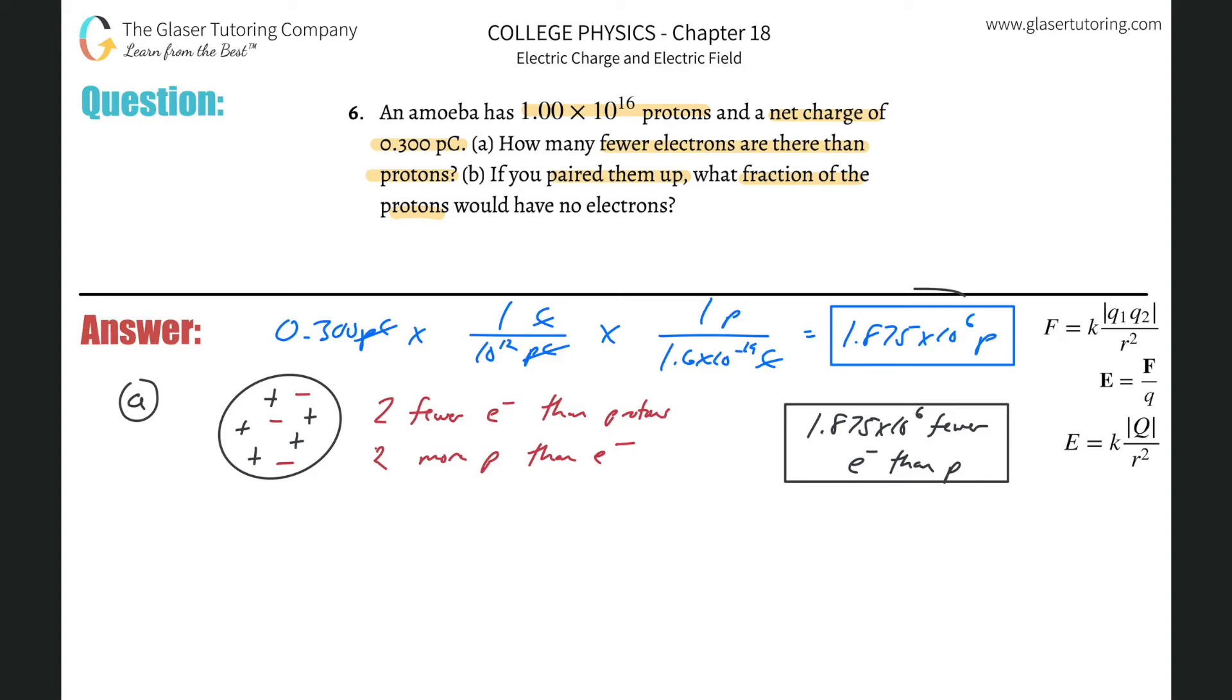We would simply take the excess number of protons, right? 1.875 times 10 to the 6th excess protons, and then divide it by the total number of protons, right? Which was 1 times 10 to the 16 protons.